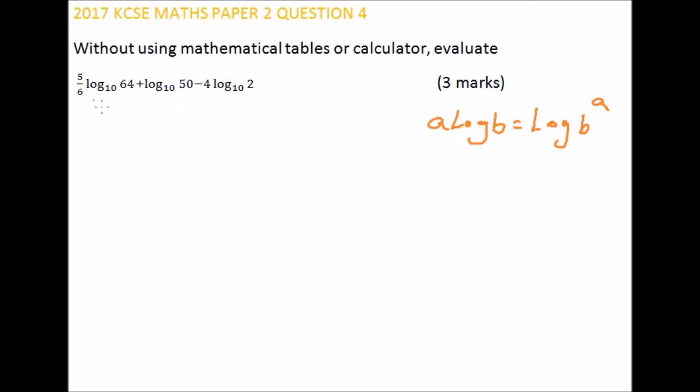So we can write this part here. Now, this is logarithm of 64 raised to 5 over 6, plus the logarithm of 50, minus logarithm of 2 to power 4.